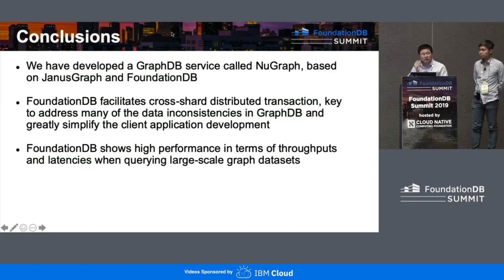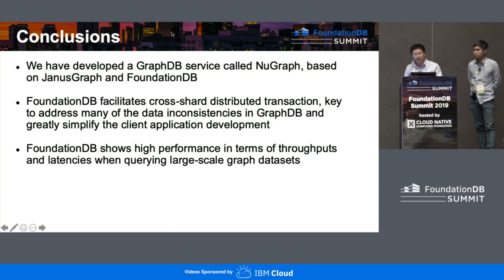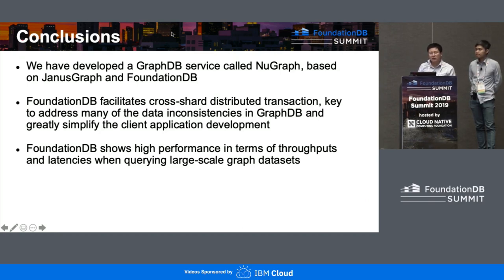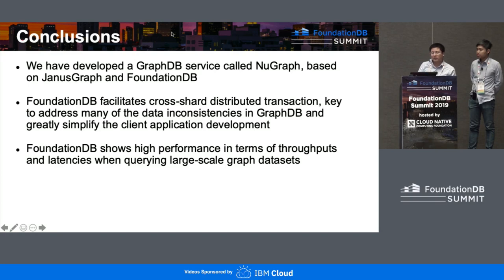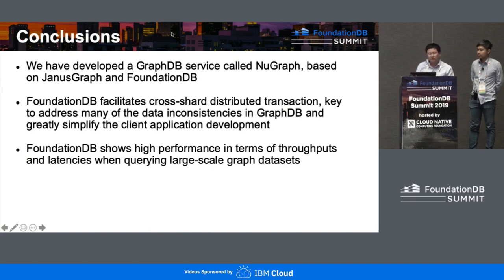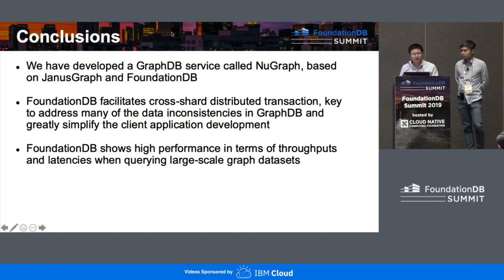In conclusion, we developed the GraphDB service called NewGraph, based on FoundationDB and JanusGraph. FoundationDB offers distributed cross-shard transactions, which is the key feature that addresses the data inconsistency issues we encountered in GraphDB, and also greatly simplifies application development. With our dataset, FoundationDB demonstrated high performance in terms of high throughput and low latency. With that, we conclude our presentation.